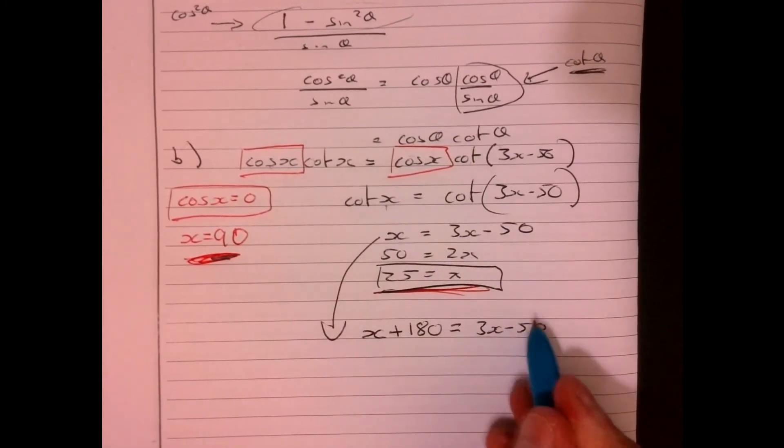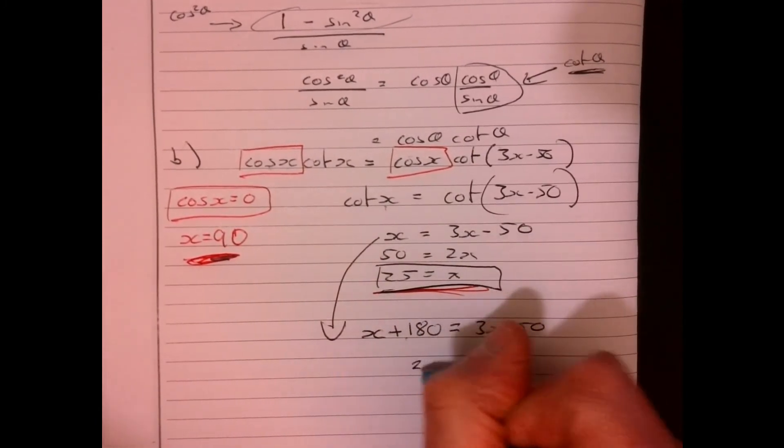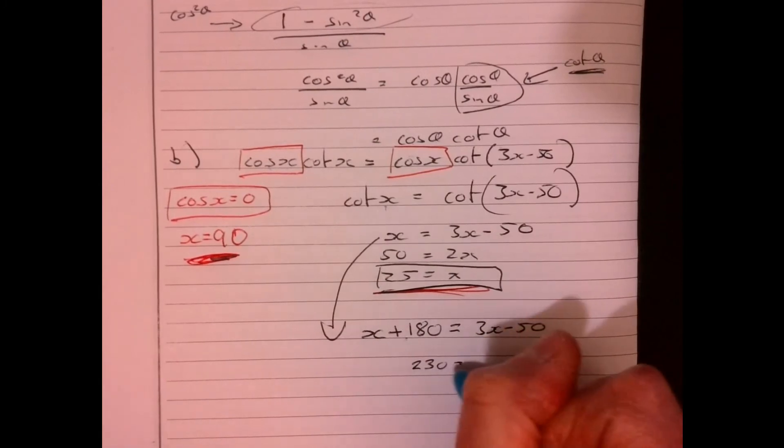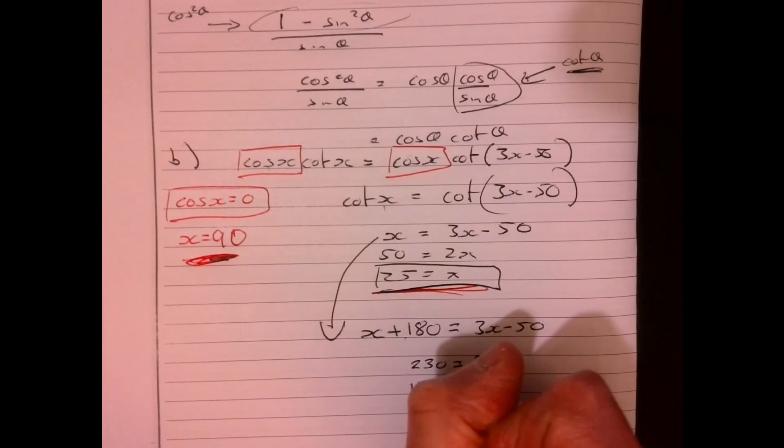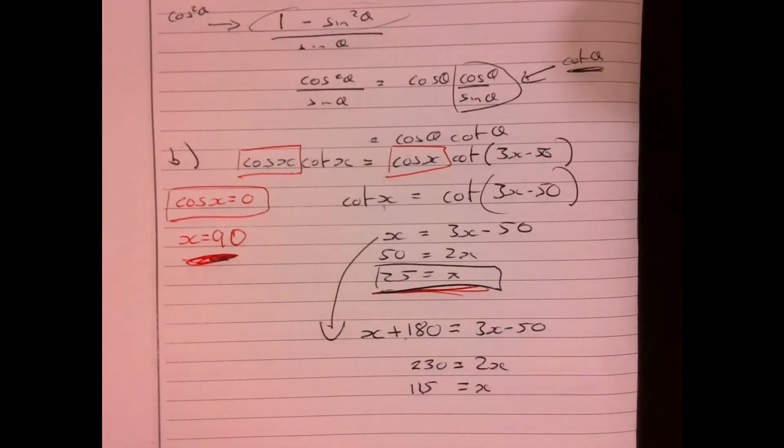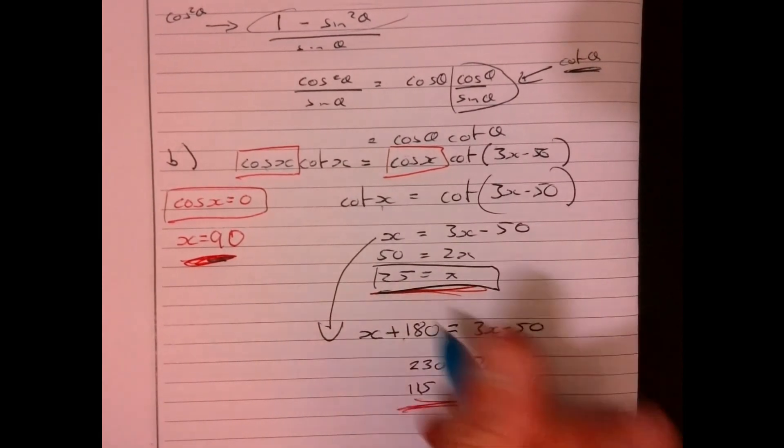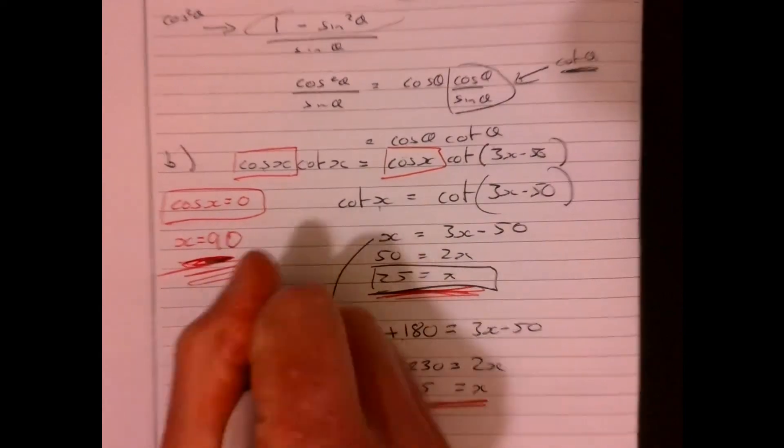So add the 50. Take away the x. 2x. So x could also equal 115. So 1, 2, 3.